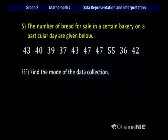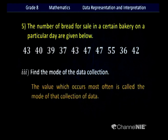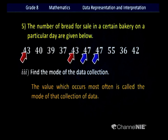To get the median, add the two middle values together and divide by 2: 42 + 43 = 85; 85 ÷ 2 = 42.5. So the median is 42.5, which can also be written as a decimal. Find the mode: the value occurring most often. Here 47 appears twice and 43 also appears twice. Since both appear equally often, there are two modes: 43 and 47.